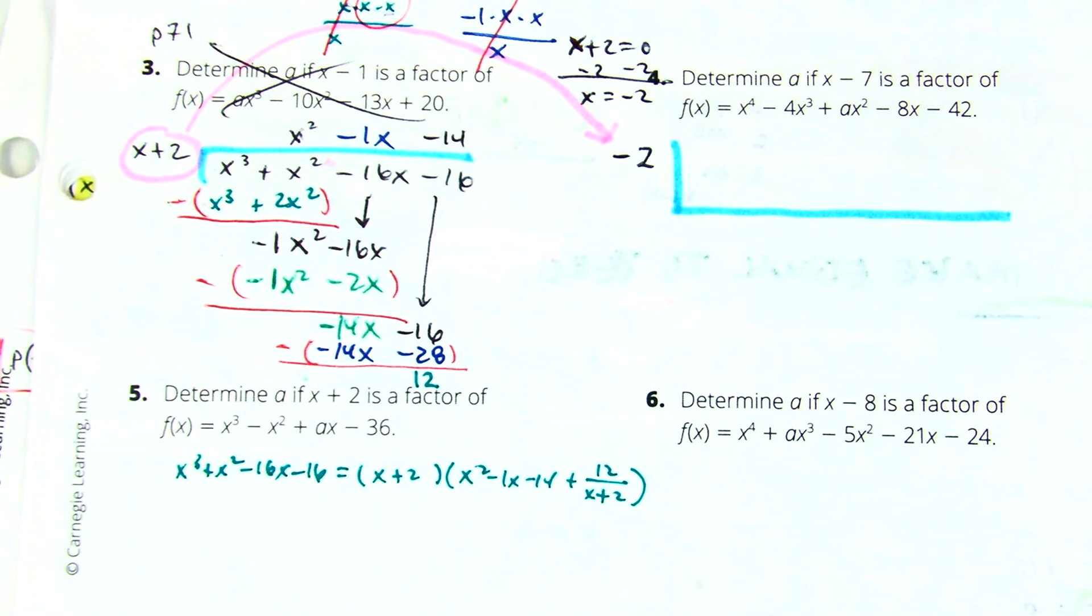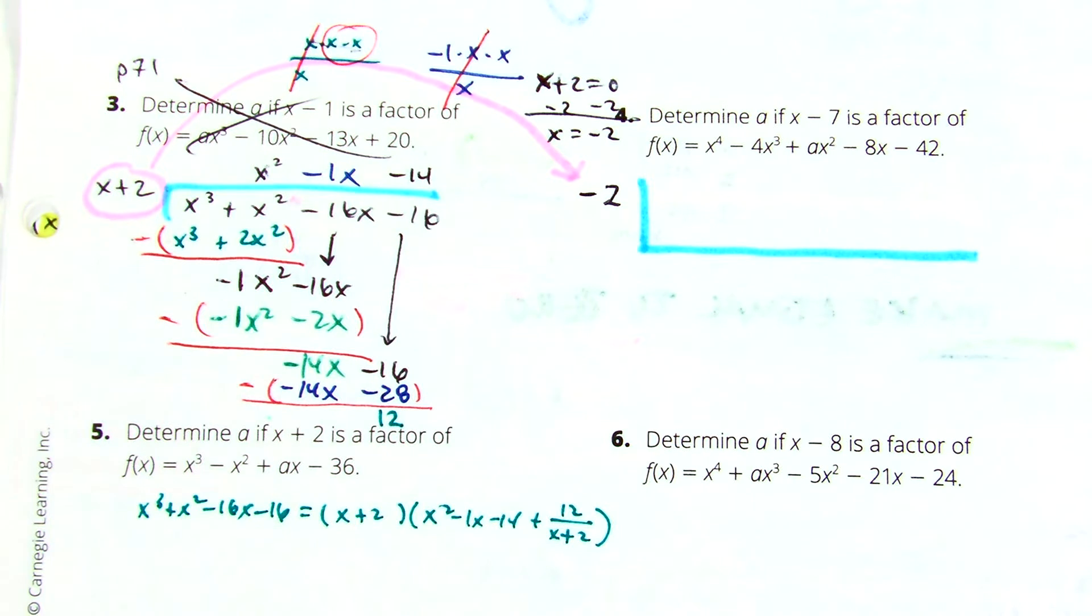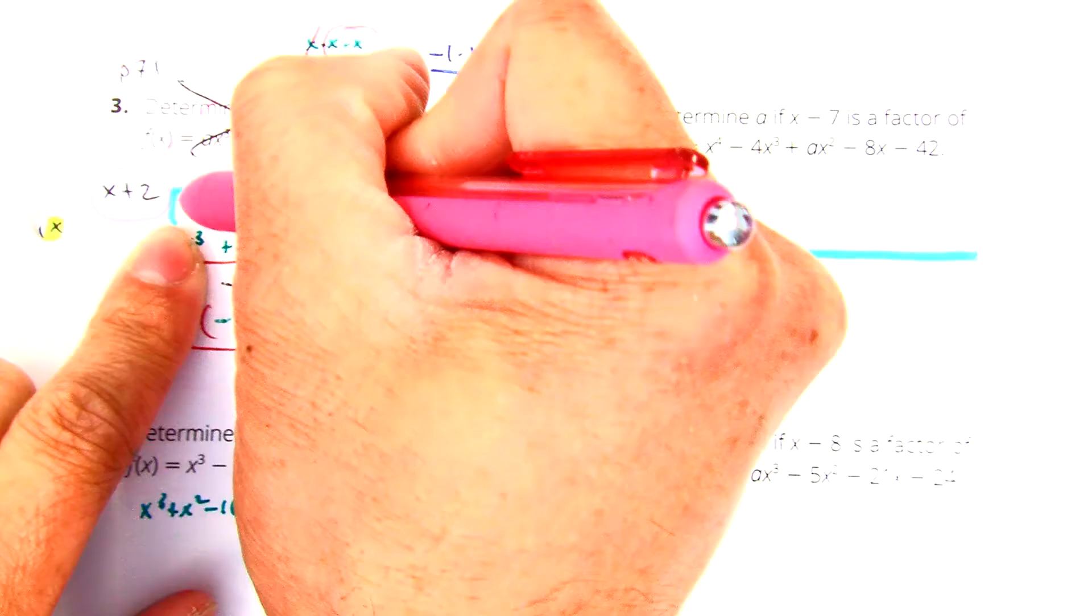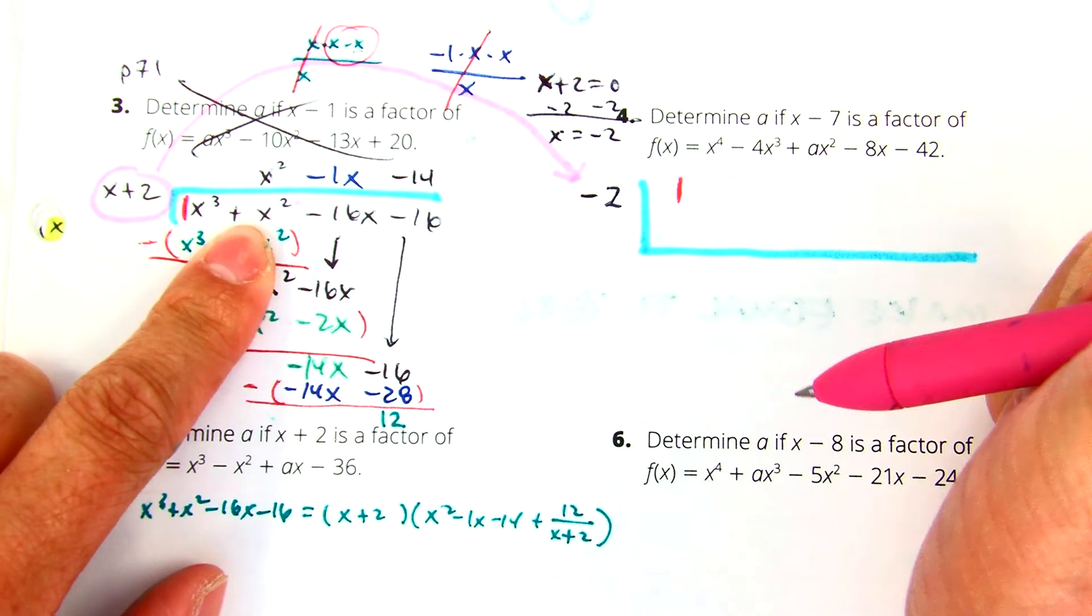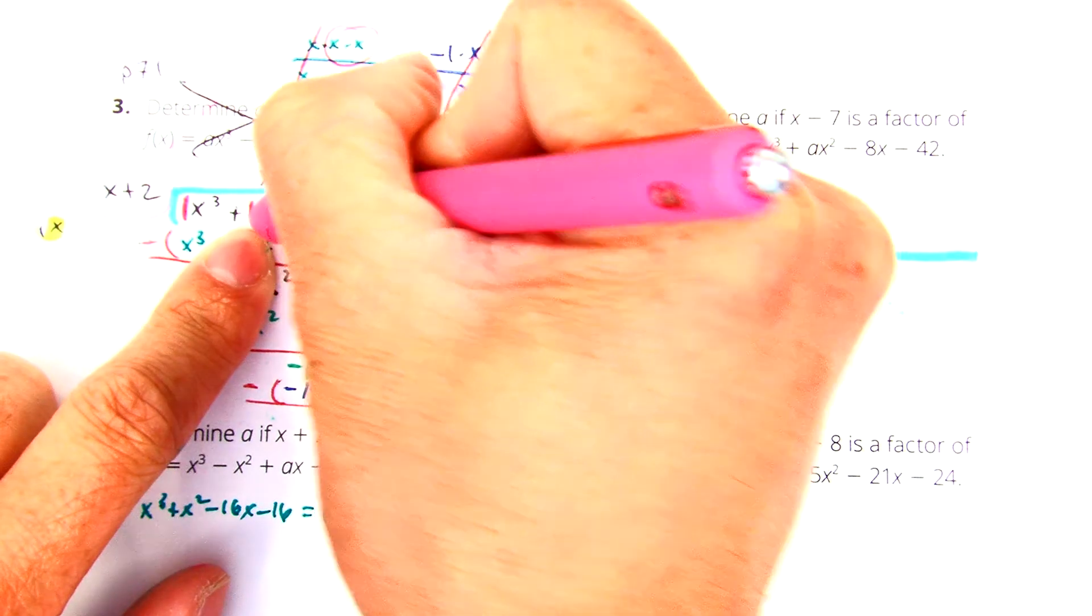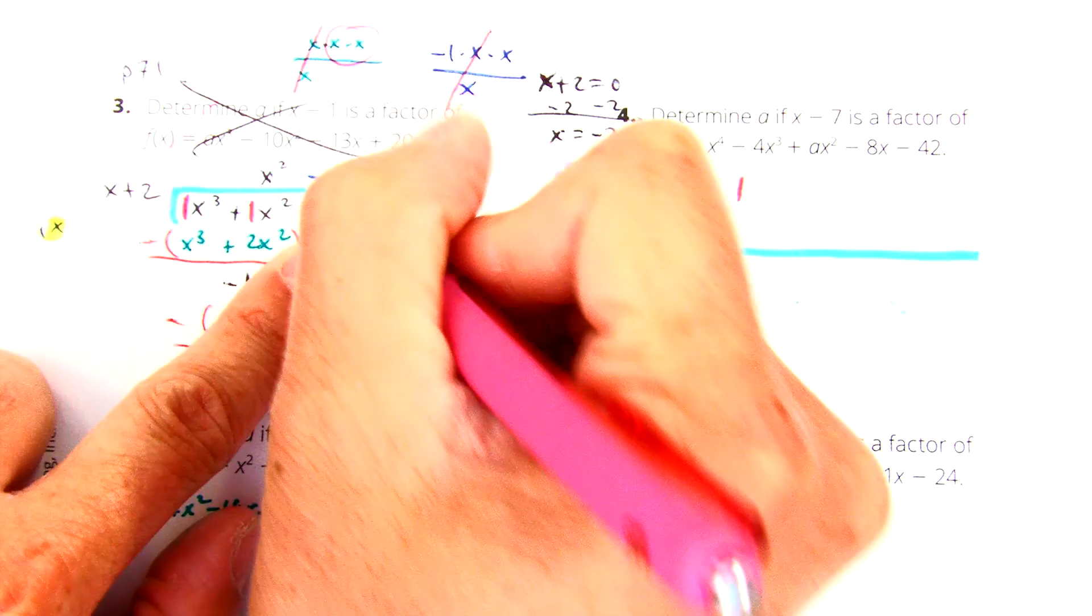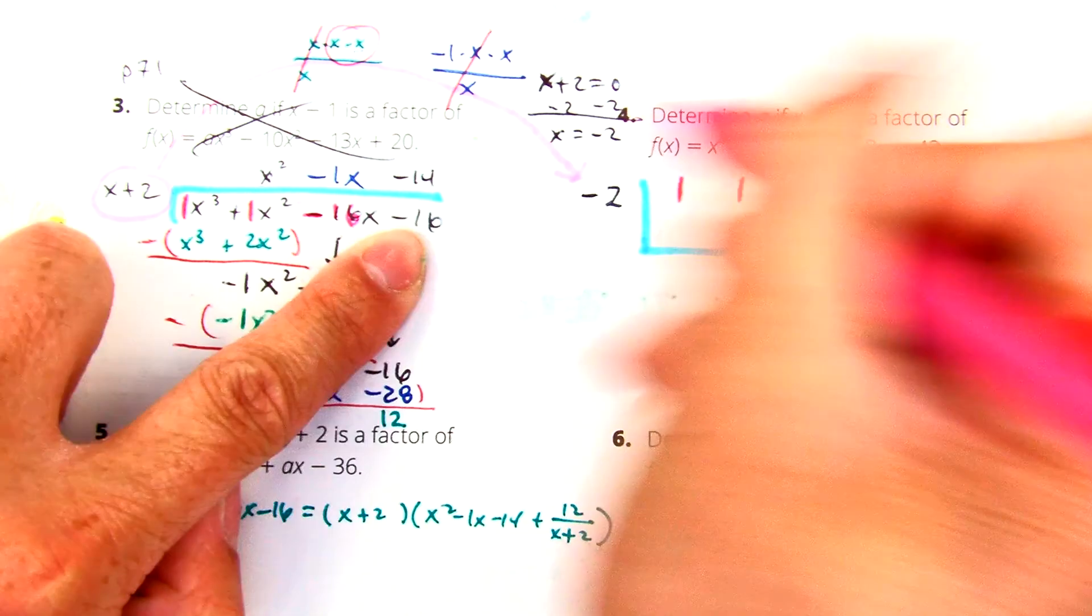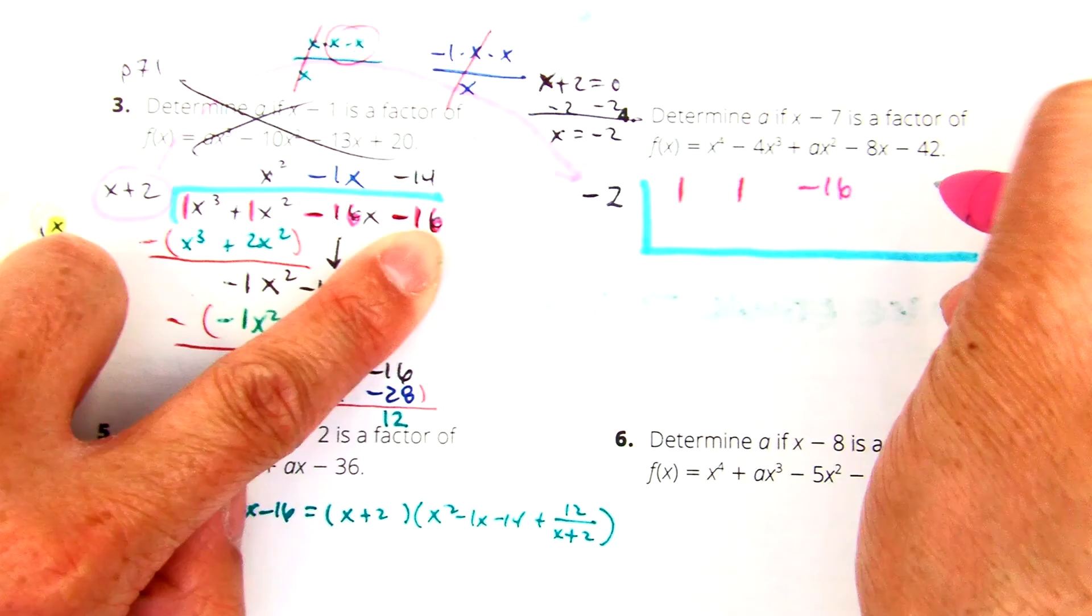Class, what's the next step? Coefficients. Okay, what are the coefficients? Let's see if I can highlight these in pink. Class, what number is in front of x to the third? So I'm going to write a one here. What number is there? This one? Negative 16. And negative 16. So coefficients are just the numbers in front.